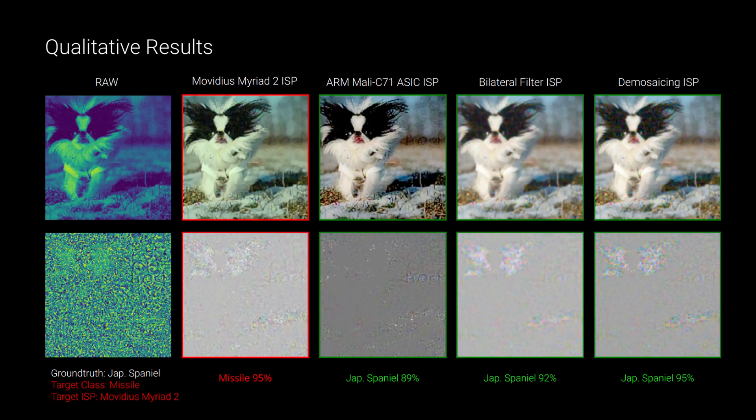It can be observed that despite having the same adversarial raw image as input, each ISP produces distinct RGB perturbations. In this case, the raw patterns only become adversarial when being processed by the Movidius ISP.